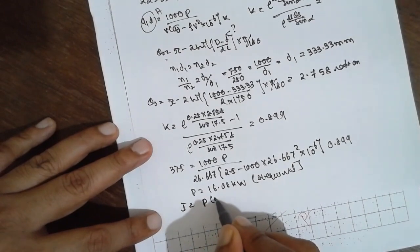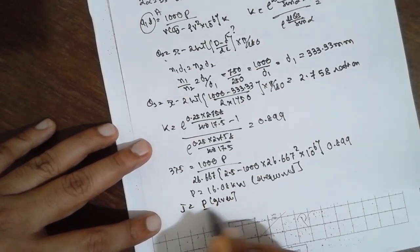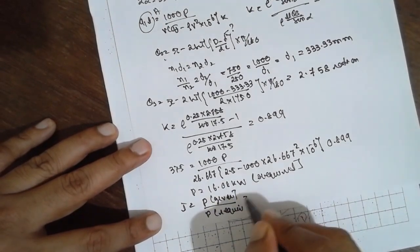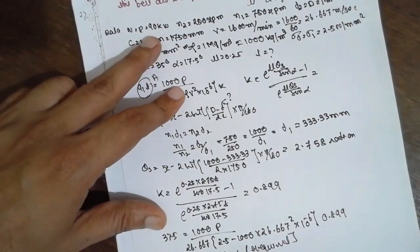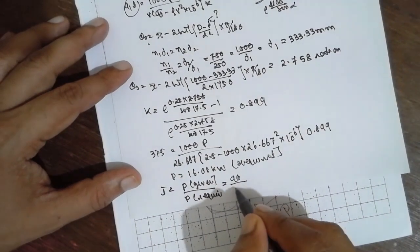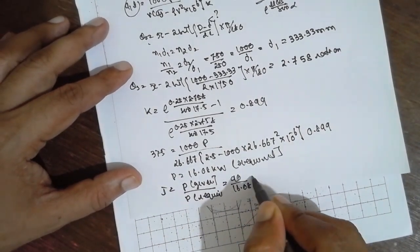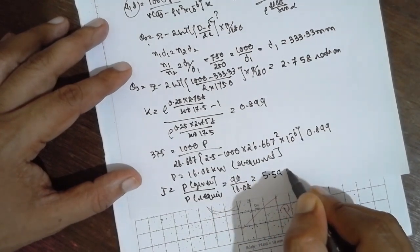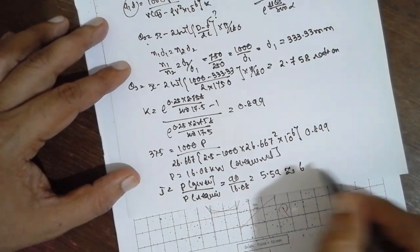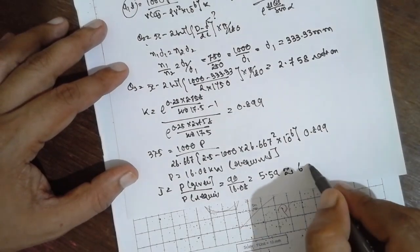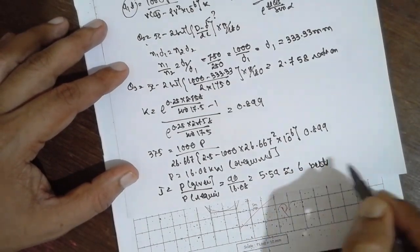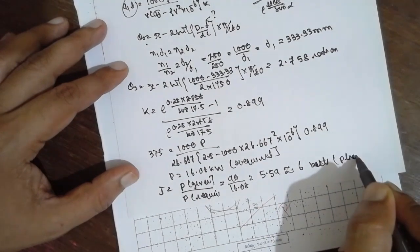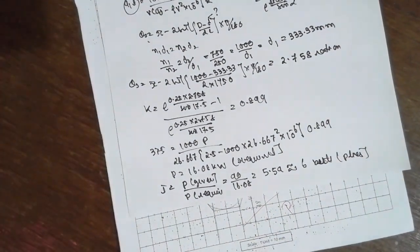Finally, number of belts i is p given divided by p required. P given is 90 divided by 16.08. The answer for this one is 5.59, approximately 6 belts or six plies. I am Santosh Laddhankar, thank you very much.